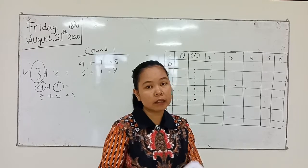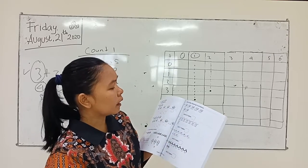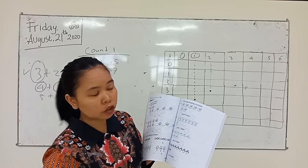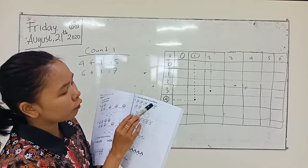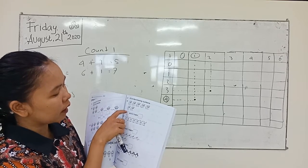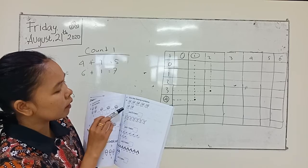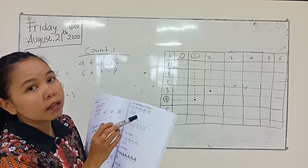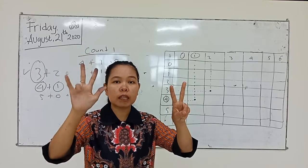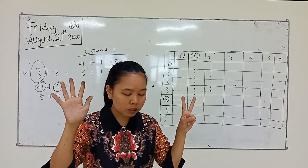Bagian 5 nanti kalian kerjakan di rumah ya. Nah, kita hitung — teacher kasih contoh ya. Yang A: 1, 2, 3, 4, 5 — ada berapa kucingnya? Kucingnya ada 5. Berarti kita tulis 5 disini. Lalu kucing yang kedua: 1, 2 — sudah dituliskan 2. Berarti 5 ditambah 2 jadi berapa? Buka jari kalian: 5 ditambah 2 berarti 1, 2, 3, 4, 5, 6, 7 — jadinya 7.